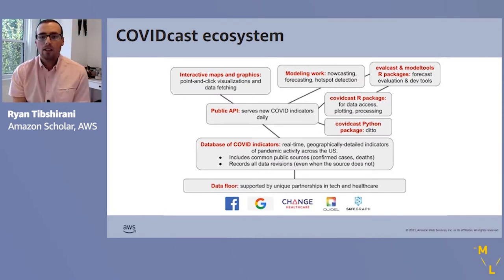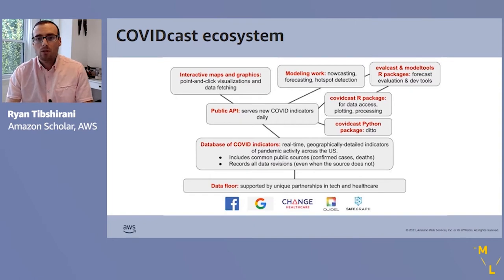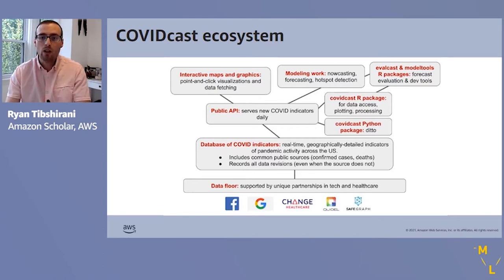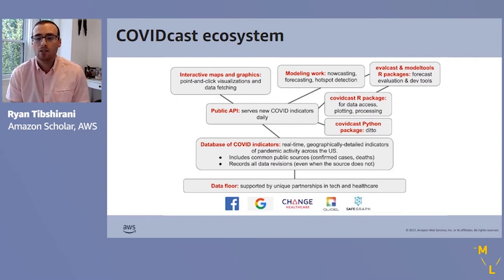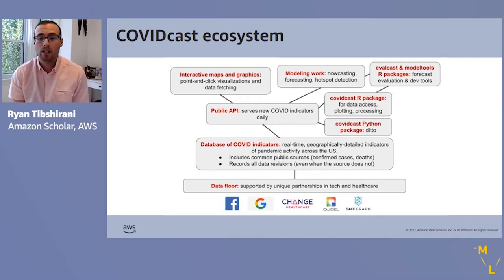One level above the data floor is the database itself. We process and create signals — also called indicators — from these data sources, so that each signal is as close to real time as possible and as geographically detailed as the data permits, reflecting one of those rungs in the severity pyramid. We also include many common public sources of COVID data, such as confirmed cases and deaths from JHU's CSSE group. Importantly, we record all revisions of the data — not just the most recent values, but the entire historical footprint, even when the source does not.